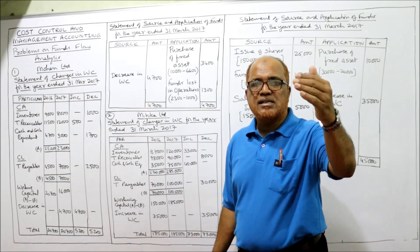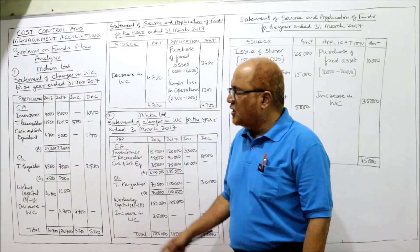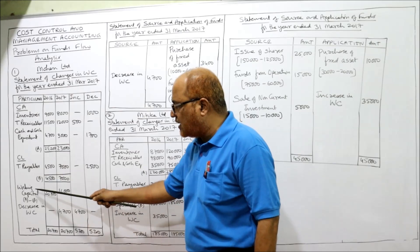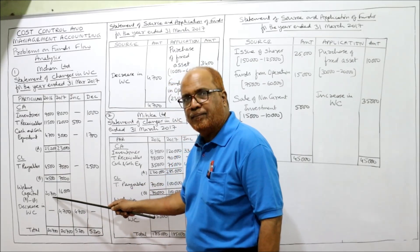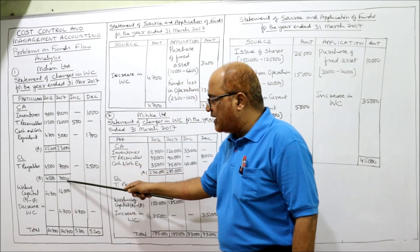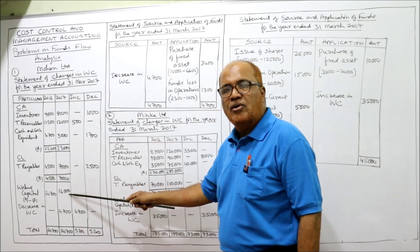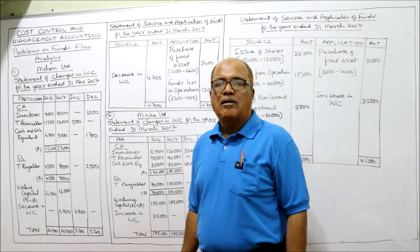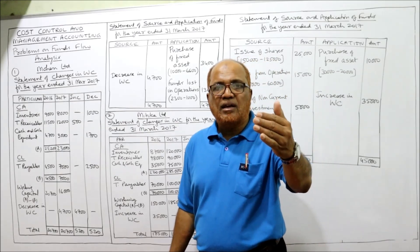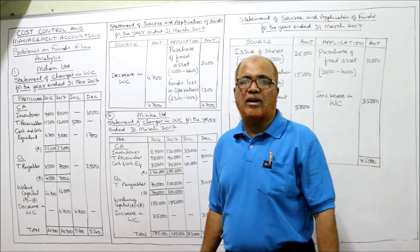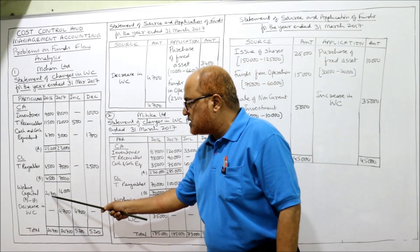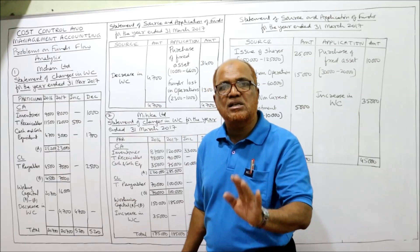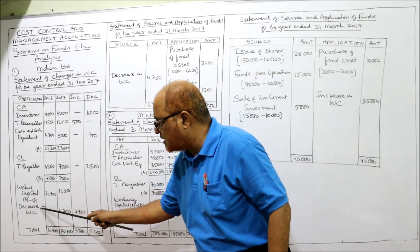Working capital means current assets minus current liabilities. So here: 25,200 minus 4,500 equals 20,700 working capital last year. Current year: 23,000 minus 7,000 equals 16,000. Comparing: last year 20,700, current year 16,000 — there is a decrease in working capital. The difference is 4,700.